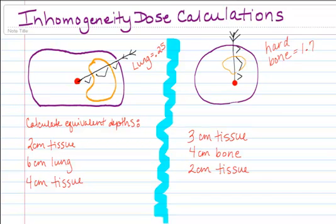So if we have 2 centimeters of tissue, you're still going to have 2 centimeters. 6 centimeters of lung is actually going to be 1.5 centimeters, because you have 6 centimeters times your 0.25 homogeneity factor. And 4 centimeters of tissue will still be 4 centimeters.